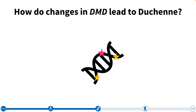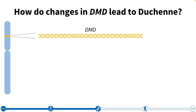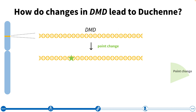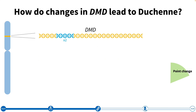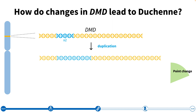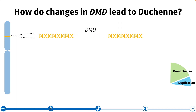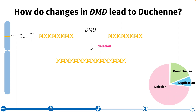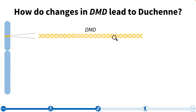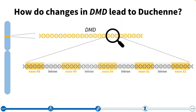Now let's explore the types of DNA changes that can lead to a loss of dystrophin. The first type is called a point change, where a very small section of the gene is altered — this occurs in around 20 percent of individuals with Duchenne. The second type is called a duplication, where a section of the DNA is repeated, making the gene longer than usual by adding one or more copies of a certain section. The final type occurs when a portion of the DMD gene is lost — this is called a deletion, and is the most common type. Let's zoom in and look at one example: a deletion of exons 49 and 50.